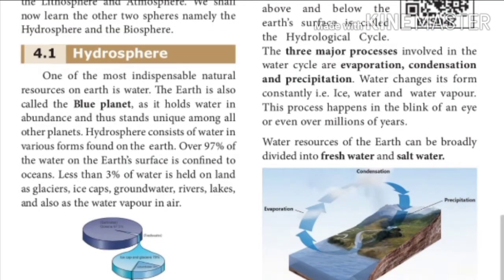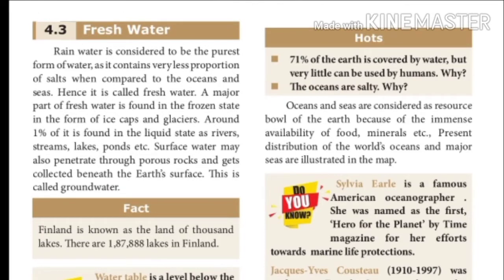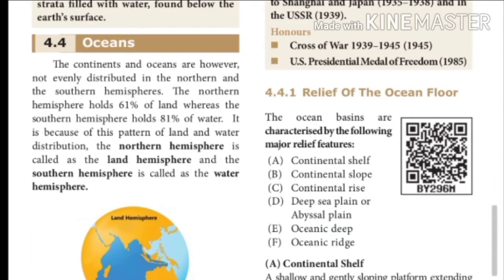Water resources of the earth can be broadly divided into fresh water and salt water. Rainwater is considered to be the purest form of water as it contains very less proportion of salt compared to oceans and seas; hence, it is called fresh water. Salt water refers to the oceans. The continents and oceans are not evenly distributed in the northern and southern hemispheres. The northern hemisphere holds 61% of land, whereas the southern hemisphere holds 81% of water. Because of this, the northern hemisphere is called the land hemisphere and the southern hemisphere is called the water hemisphere.